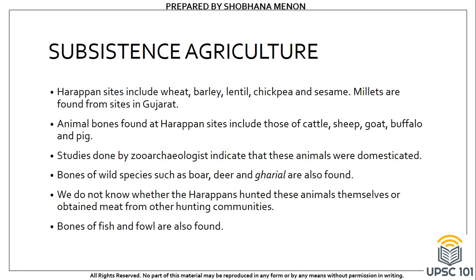As far as occupation is concerned, the Harappans primarily practiced agriculture and animal rearing. In agriculture, they cultivated wheat, barley, lentil, chickpea and sesame. They also domesticated cattle, sheep, goat, buffalo and pig. Evidence of wild species such as boar, deer and gharyal was also found. This proves that the Harappans were primarily agriculturalists and were engaged in domestication of animals.